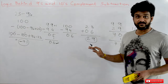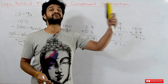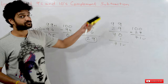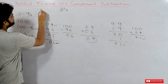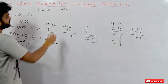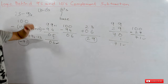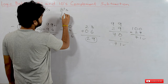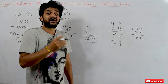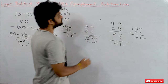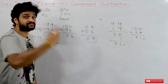This logic of 9s and 10s complement subtraction can be applied to any number system. If you generalize this concept to any number system it is called b's complement and (b minus 1)'s complement, where b stands for the base. For the decimal number system, the base is 10, giving 10s complement and 9s complement. For the binary number system, the base is 2, giving 2's complement and 1's complement, and the same logic applies.